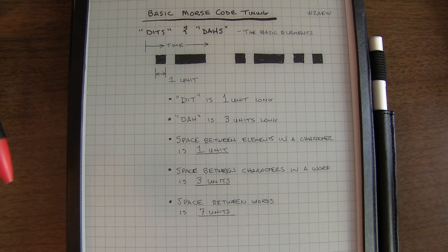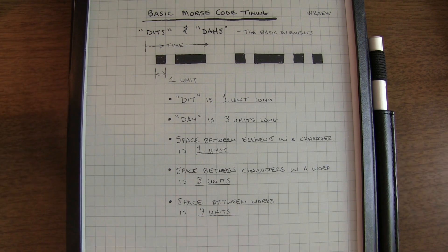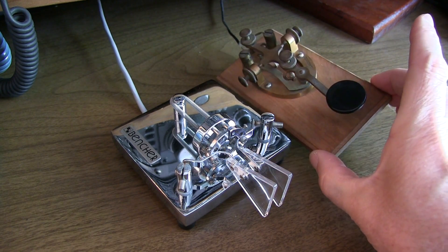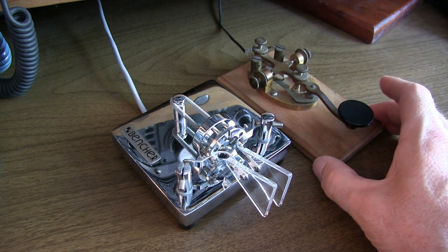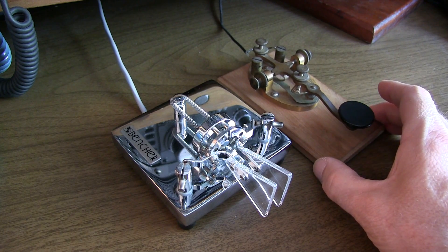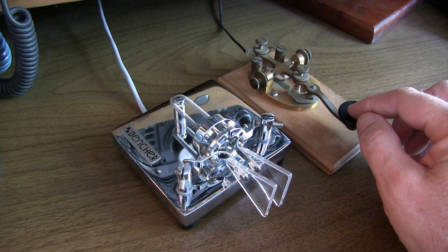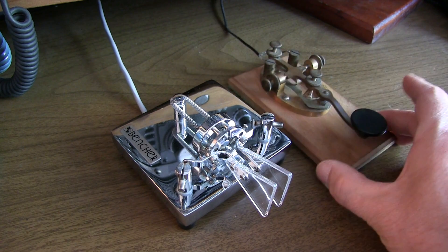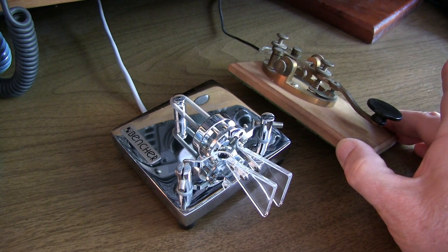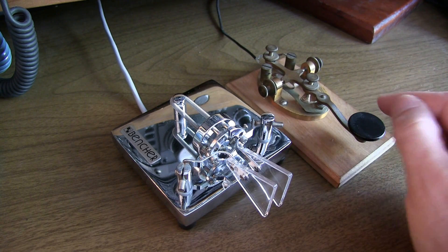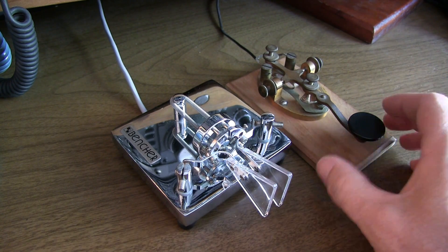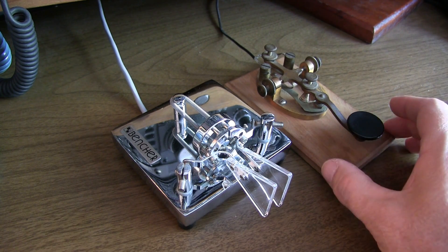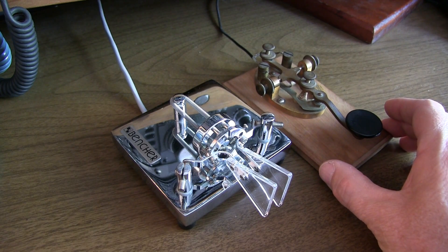So let's take a look at how the different keying methods affect this timing. Now the straight key is really nothing more than a fancy, normally open, push-button switch. So we form the dits and dahs of the morse code characters by simply opening and closing the switch. Therefore, the timing of the dits and the dahs and all the spacing involved is completely under the control of your finger. So it does take some practice to get consistent in forming the characters and the spacings to make good, understandable morse code.